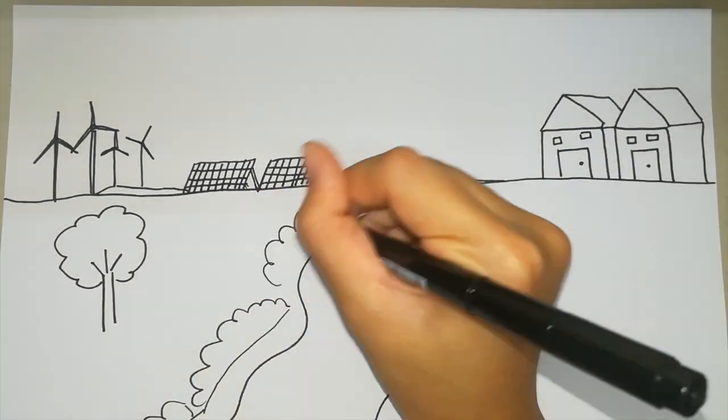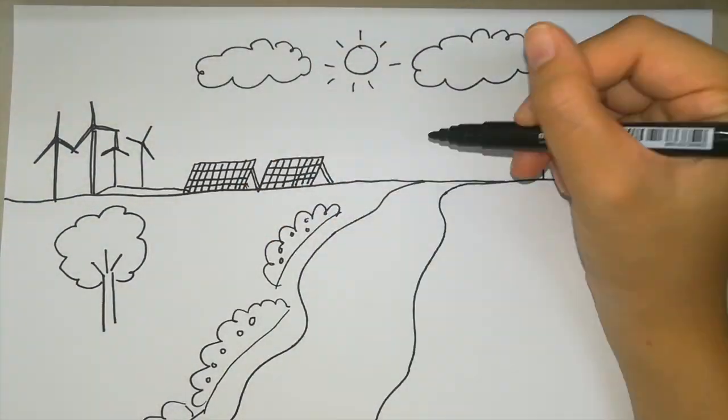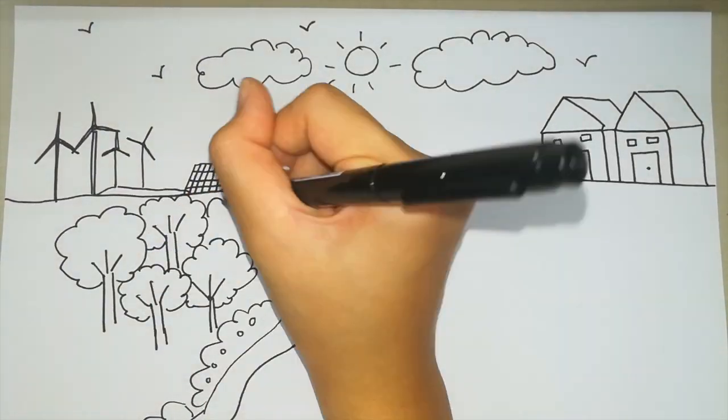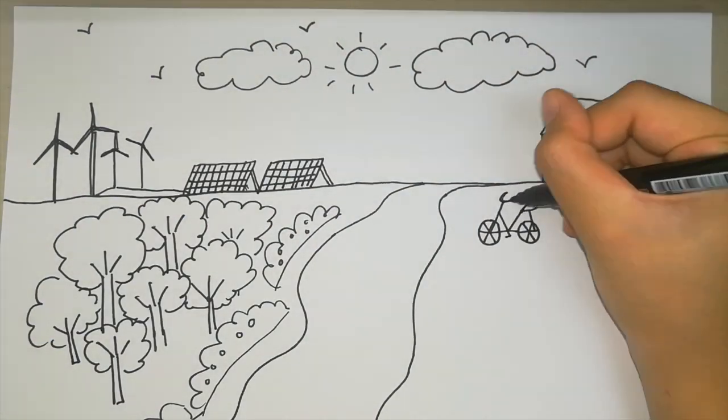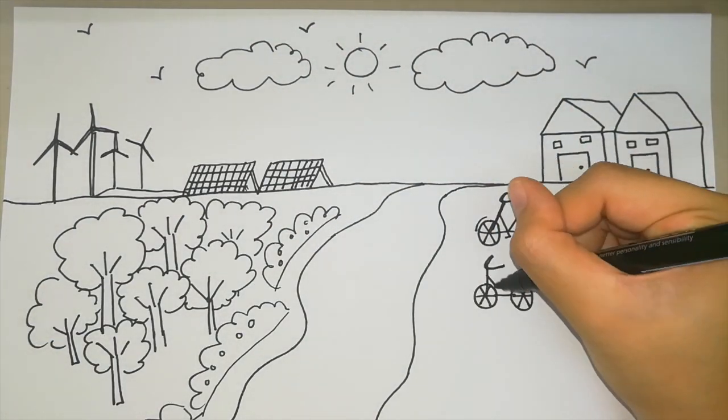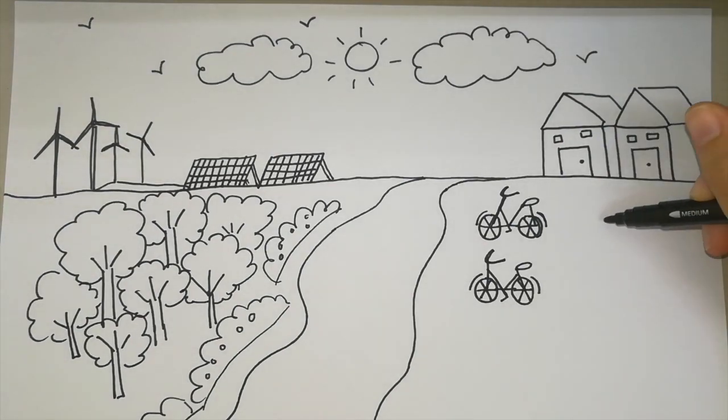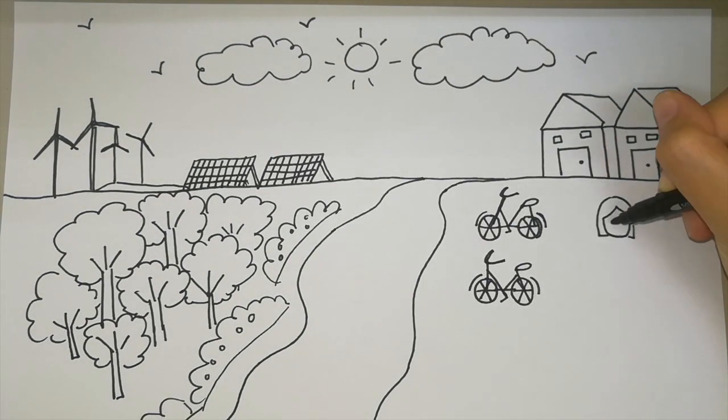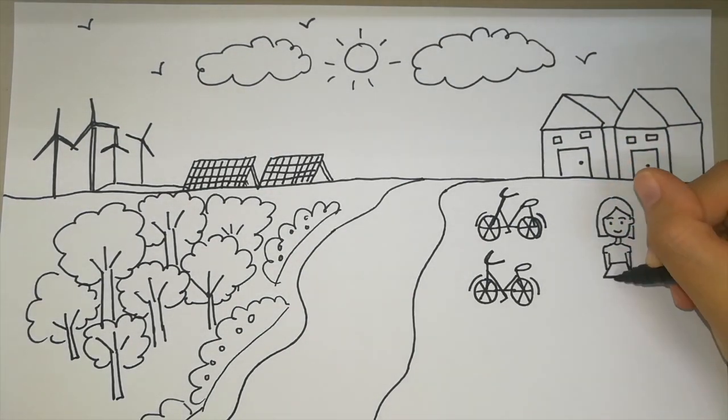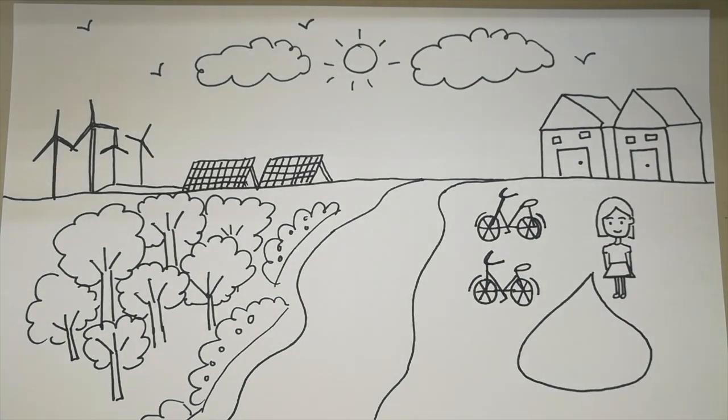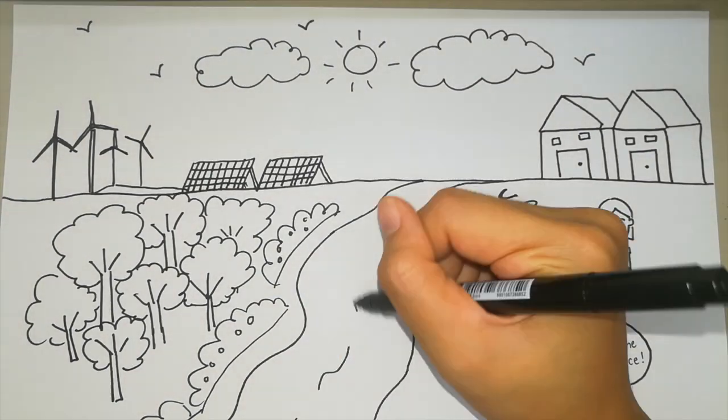And we could also use clean energy resources such as solar, wind, geothermal technologies. Another way we could contribute to this is use energy efficient devices such as CFL lights, which consume less electricity. Thank you.